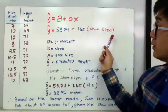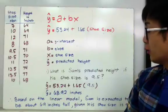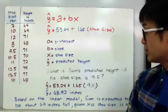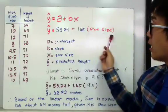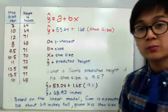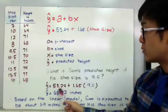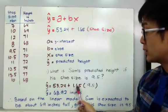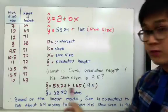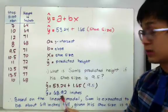How are we going to use the linear model in predicting an outcome? Here's an example. Let's say we're interested to find Sam's predicted height when his shoe size is 9.5. Using our linear model based on the 10 samples, we'll approximate Sam's height. So y-hat equals 53.24 plus 1.65 times 9.5, and by simplifying, y-hat equals 68.92 inches.